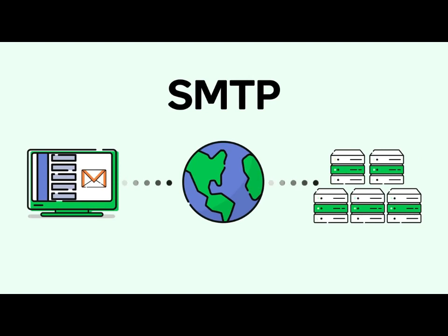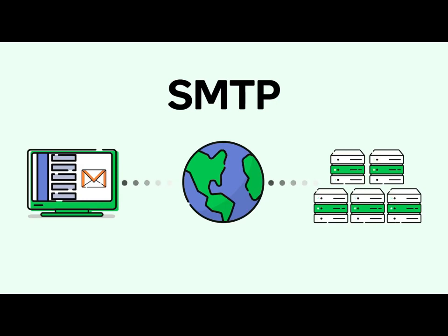Let's recap. SMTP is the protocol that allows you to send emails from an email client to a mail server. Once on a sender's outgoing email server, SMTP uses the domain name in an email address to locate the recipient's email server, where the email remains until the recipient receives it.